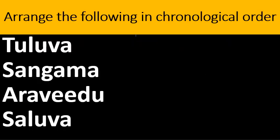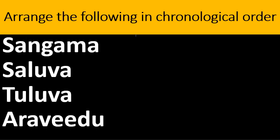Arrange the following in chronological order: Tuluva, Sangama, Aravidu and Saluva — these are the four dynasties of the Vijayanagara kingdom. The correct chronological order is: Sangama first, then Saluva, then Tuluva, and lastly Aravidu.